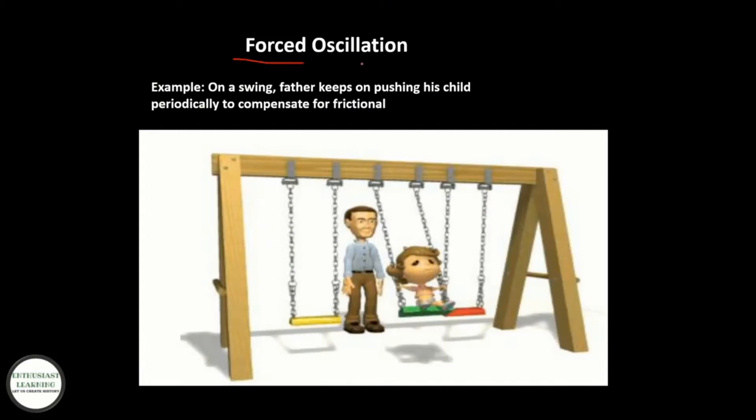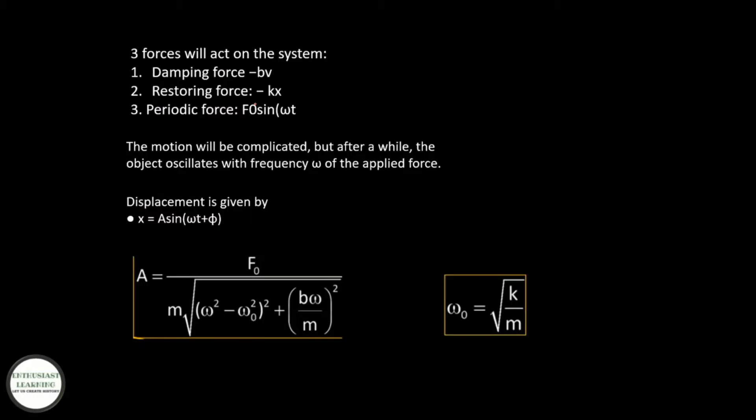Forced oscillations. Example: on a swing, father keeps on pushing his child periodically to compensate for frictional motion. Three forces will act on the system: damping force, restoring force, and periodic force. The motion will be complicated, but after a while the object oscillates with frequency ω of the applied force. Displacement is given by x = A sin(ωt + φ).